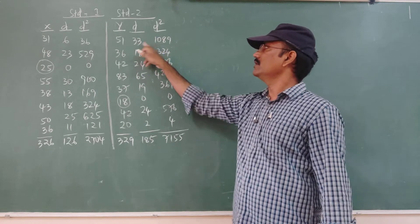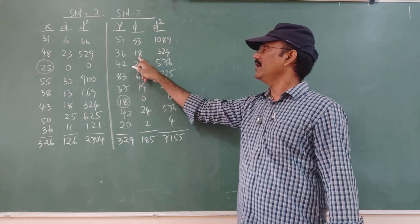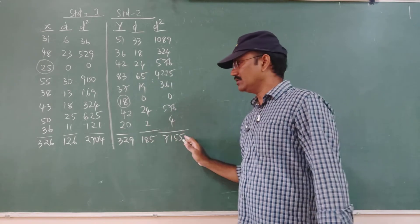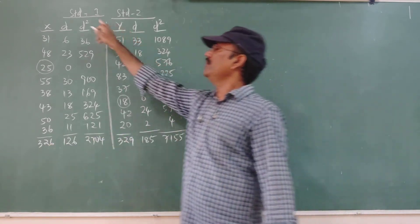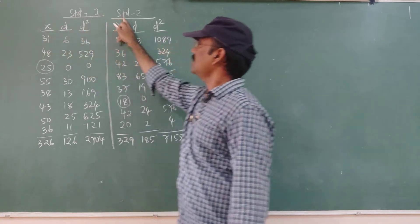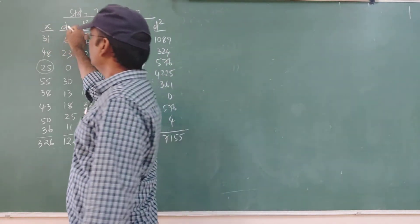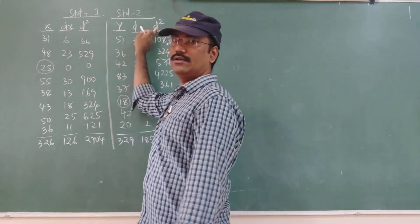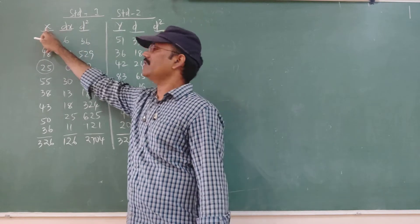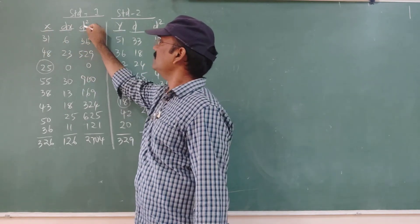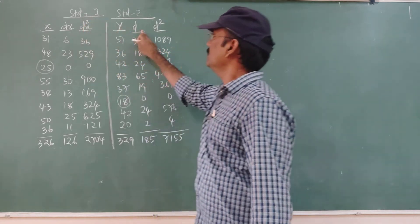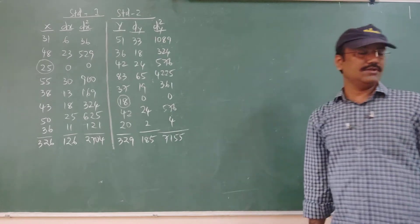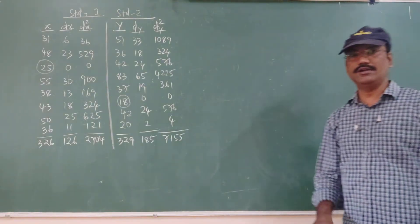Now all these D values are squared. We take the total of all these numbers. We name Standard 1 as x and Standard 2 as y. The D values for x are called dx and dx squared, and the D values for y are called dy and dy squared. Now use the formula for mean, standard deviation, and CV.